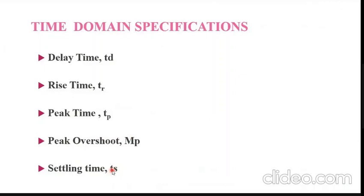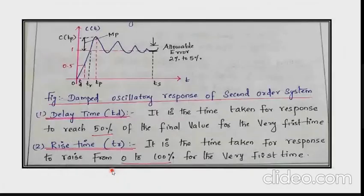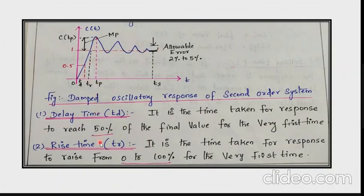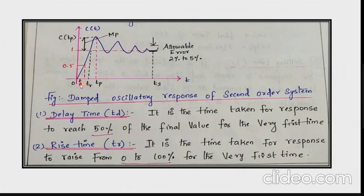Now let's see the definitions for all these time domain specifications. This is a response for an underdamped system, where the damping ratio psi ranges between 0 and 1. Delay time is the time taken by the response to reach 50% of the final value. The time at which the response reaches 50% is called the delay time, expressed as Td.